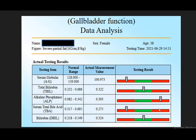So, serum total bile acid — abnormal high — under gallbladder function data analysis is the place to detect gallstones.